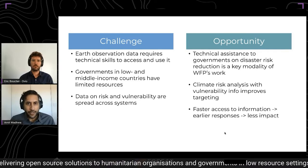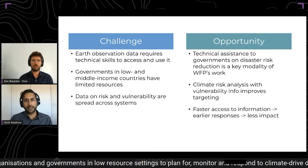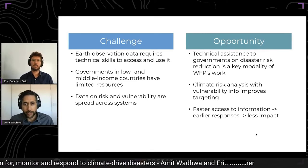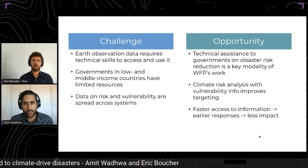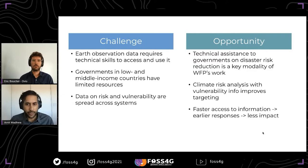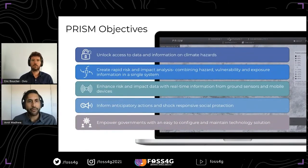With these challenges there are opportunities. A key component of WFP's work is technical assistance to governments, including on disaster risk reduction. By bringing vulnerability information into a climate risk analysis, we can improve our overall geographic targeting, prioritizing those most in need of assistance. This also gives the opportunity to produce faster access to information, which means earlier responses and ideally less impact. We have developed a project called PRISM — the Platform for Real-Time Information and Situation Monitoring — with a few key objectives.